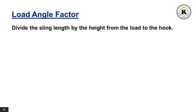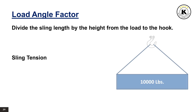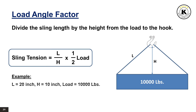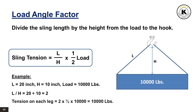The load angle factor is calculated by dividing the sling length by the height from the load to the hook. By definition, sling tension equals sling length L divided by height H from the load to the hook, multiplied by half of the load weight in pounds. For example, if L equals 20 inches, H equals 10 inches, and the load equals 10,000 pounds, then L divided by H equals 2, and sling tension equals 2 multiplied by half the load, giving 10,000 pounds of tension on each sling leg.